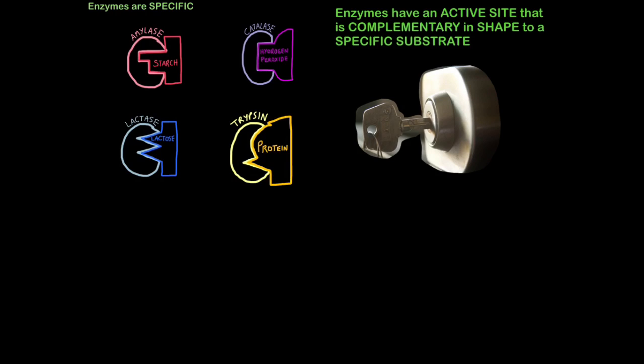So it's quite common in exams that you're required to explain the lock and key model. It will usually be about three marks. They can sometimes ask you to draw a diagram as well. You could draw something like these. But here's what you write. Enzymes have an active site that is complementary in shape to a specific substrate. The capitalized words represent different marking points. So three marks in total.